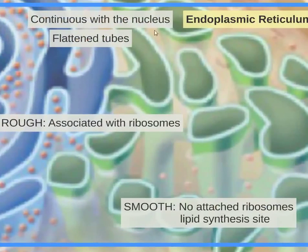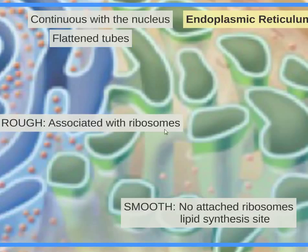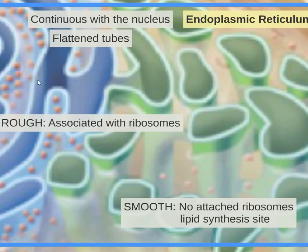The endoplasmic reticulum is continuous with the nucleus, meaning it's attached to the nuclear envelope. It's like flattened tubes, so think of it like a freeway. When associated with ribosomes — meaning attached — it is the rough ER. Ribosomes are the site of protein synthesis: mRNA is taken, tRNA is used, and proteins are made, attached directly to this rough ER. Eventually it could either become the Golgi apparatus or smooth ER, which has no attached ribosomes but is the site of lipid synthesis.